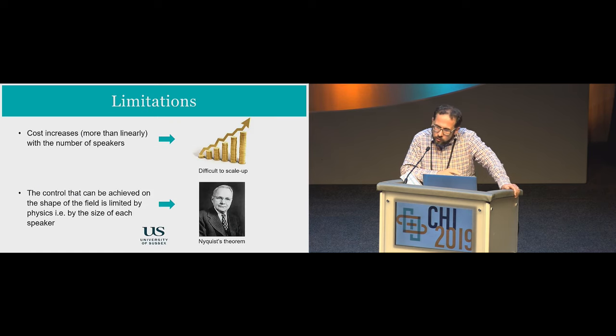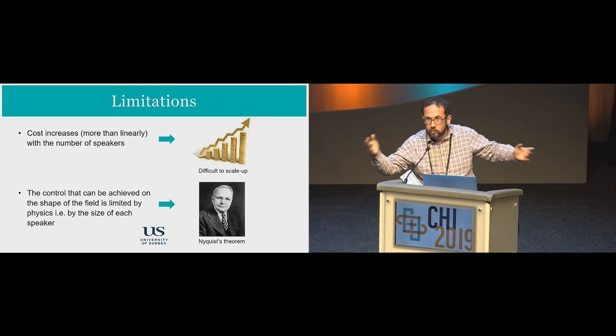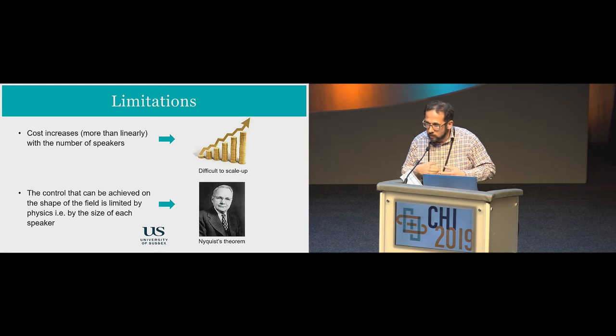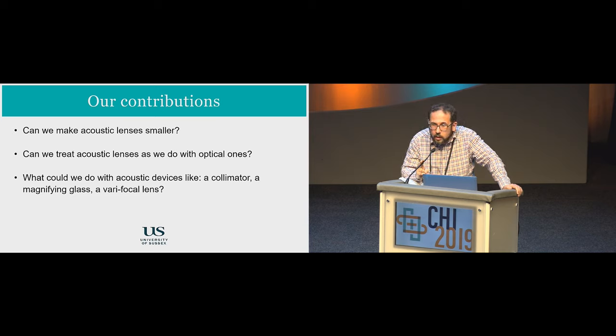What's the problem then? The problem is that these systems do not scale up very well. The cost increases hugely. And more importantly, there is a physical limitation on the control that you can get on the field, which comes from the Nyquist theorem mainly. And the fact is that because technology creates speakers which are big, sometimes you have artifacts when you don't want. So in a place like that, then you need to control that with the acoustics and do some work with the room, with the seats, with the carpet, et cetera. So in this work, the big question I want to start with is, can we make acoustic lenses smaller? And then can we treat acoustic lenses as we do with optical ones?